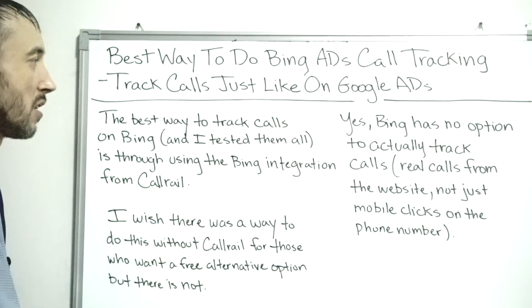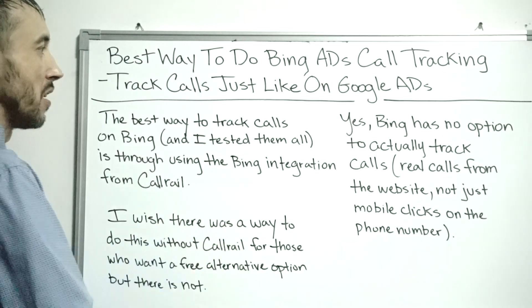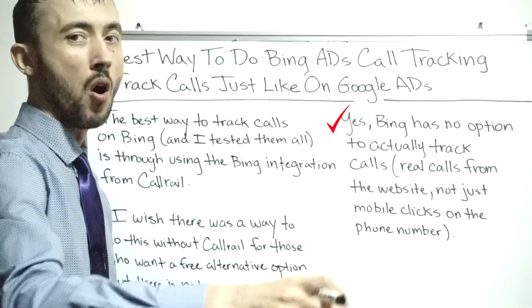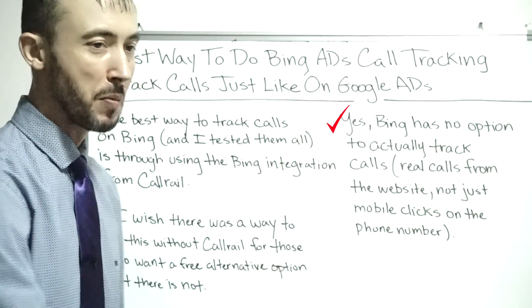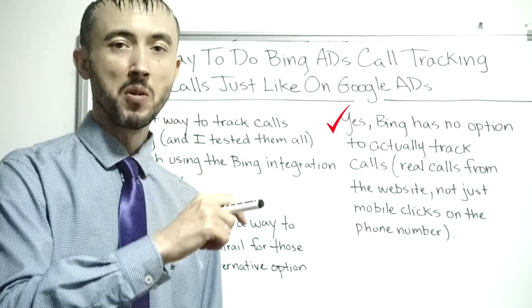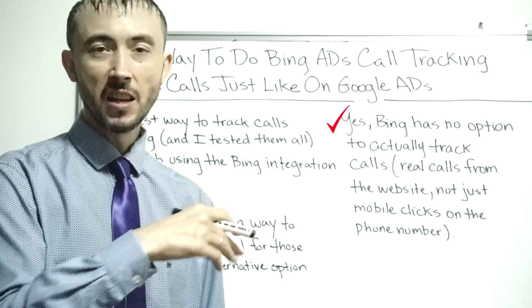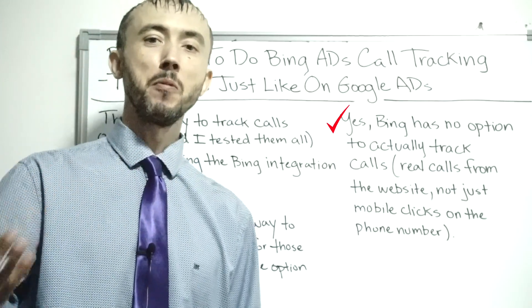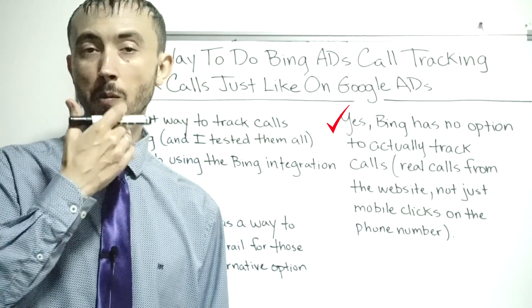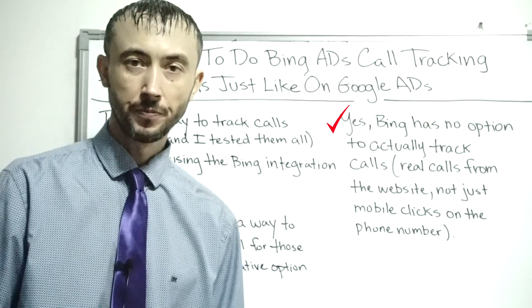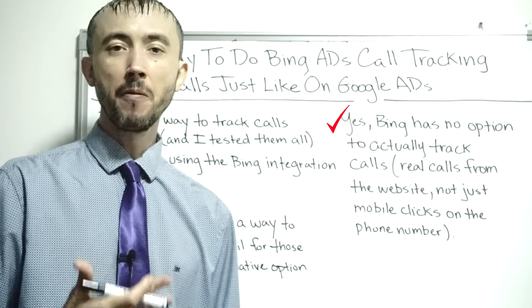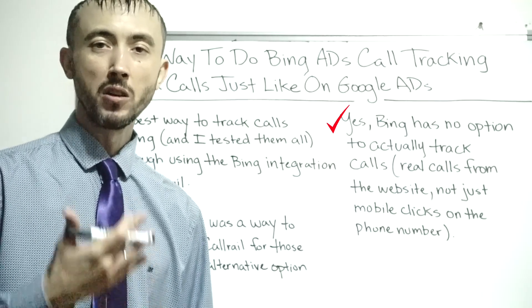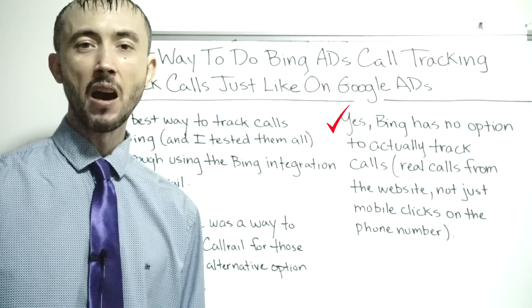Getting into the content — how to do call tracking on Bing. Bing has no option to actually track real calls from the website, not just mobile clicks on the phone number. A lot of people limit themselves to tracking if somebody on a mobile device clicks the phone number to call, and that's less than half — or about half — of your calls. Roughly half the people use a mobile device to get to your website or landing page, and half do not. So why only collect half of the possible call data? When you're optimizing your ads with only half the data, you're going to make really poor decisions about what to do with your account.